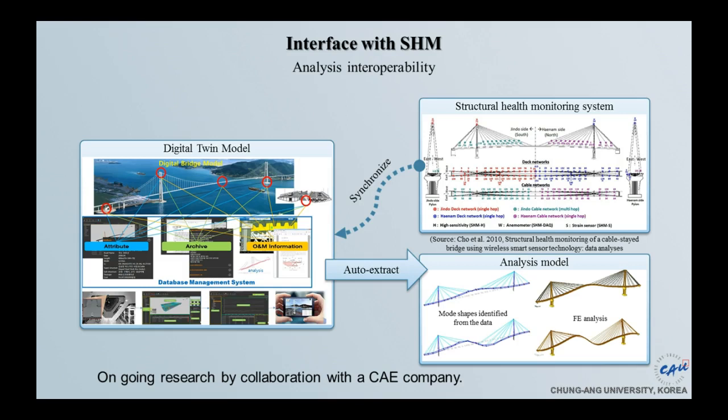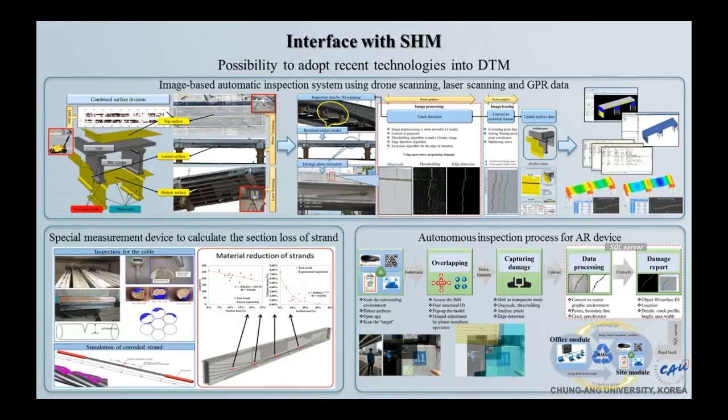One challenging task is interoperability between the 3D model and the analysis model. This is ongoing research work by collaboration with Bentley. We are trying to combine the RM analysis model with 3D models. Another interface is damage recording — in Korea we have NDE methods for damage detection of road surface and scanning by drones. We define the IPSI surface to map those images to the 3D models, so the digital model can collect these images, which carry quantity information about damages.